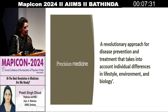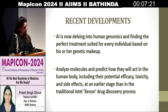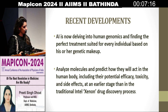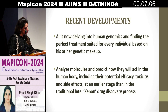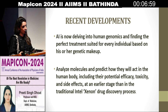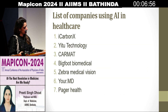This is a revolutionary approach for disease prevention and treatment that accounts for individual differences in lifestyle, environment, and biology. Recent developments show AI is now advancing into human genomics, finding the perfect treatment suited for every individual based on their genetic makeup. It analyzes molecules and predicts how they will act in the human body, including potential efficacy, toxicity, and side effects — at an earlier stage than in the traditional drug discovery process.